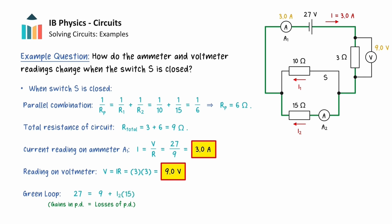which we have found using the relationship V = IR. We can now rearrange this for the current in ammeter 2, giving a value of 1.2 amps.